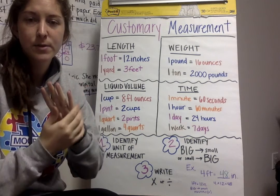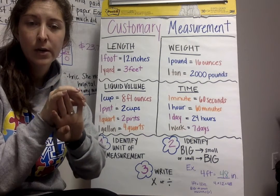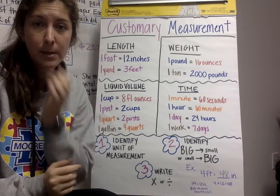There are four different types of customary measurements. There's length, weight, liquid volume or capacity, and time. So those are the four different types that we're going to be talking about.